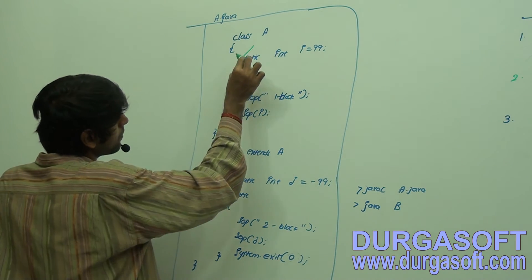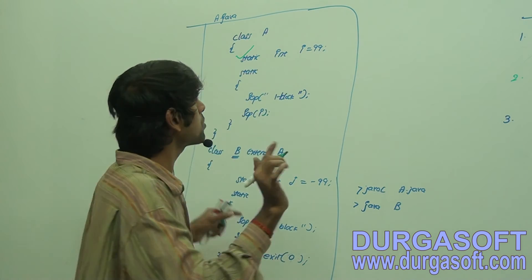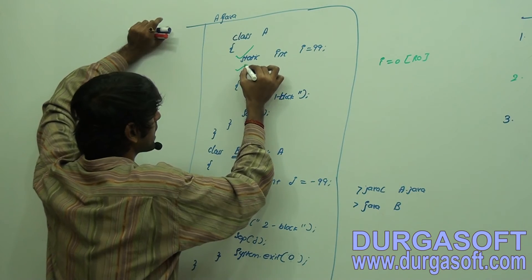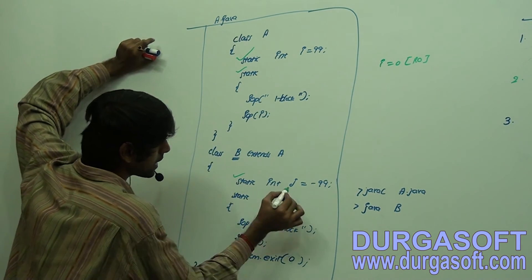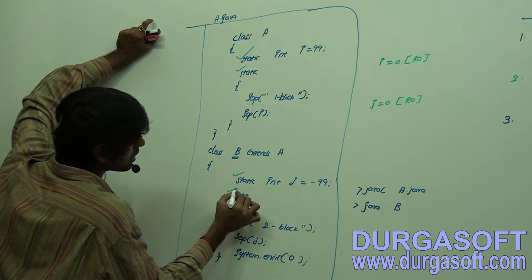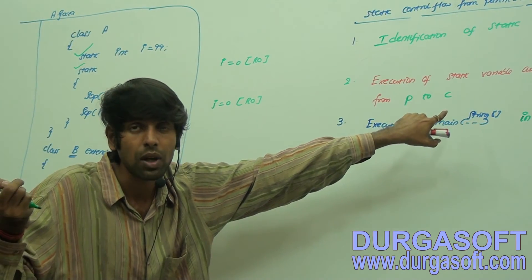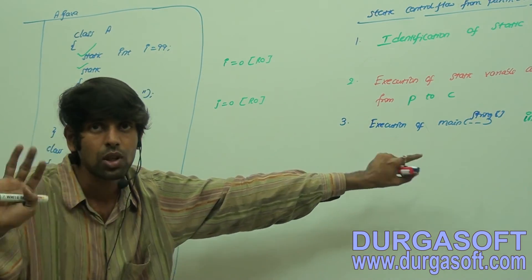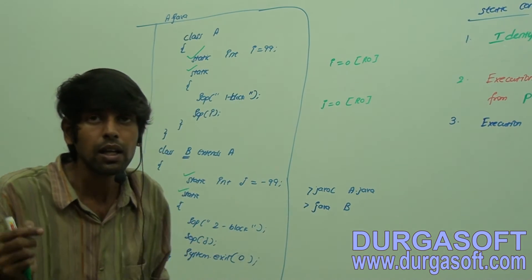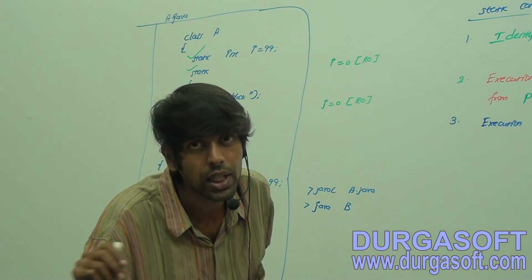Whenever static data members are identified, they are in a read-only state and default values are assigned. So variable i will be 0 in read-only state. Then coming to the child, variable j is also identified with value 0 in read-only state. The main method reference is also identified. Next step is execution of static variable assignments and static block execution from top to bottom.